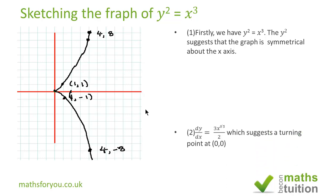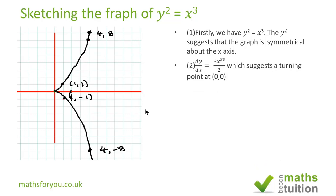Now secondly, I had to differentiate y squared is equal to x to the power of 3 over 2. And if I differentiate that, I have that 3 over 2, sorry, dy dx is equal to 3 over 2 x to the power of 0.5 or square root of x. Now this suggests to me that there is a turning point at 0, 0.